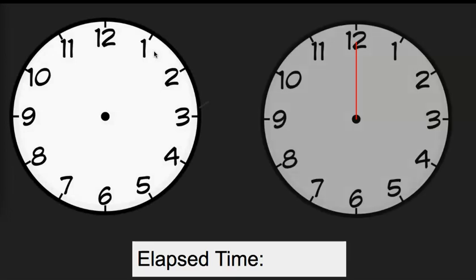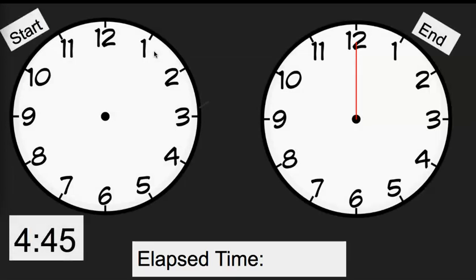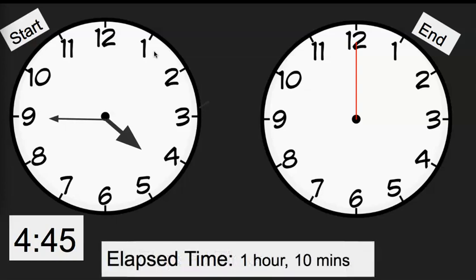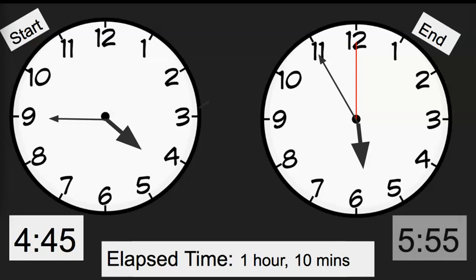Set up your paper — Jason went to the park at 4:45. He played at the park for one hour and ten minutes, so my elapsed time is going to be one hour and ten minutes. Pause the video to figure it out. That would give me 5:55. Give me a thumbs up if you got that right. Nice work.